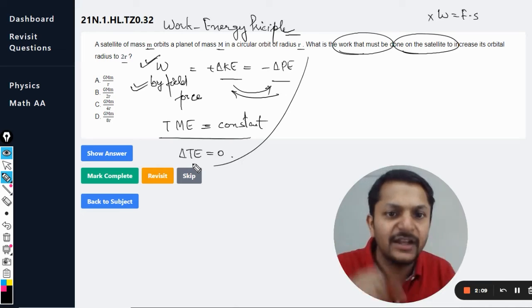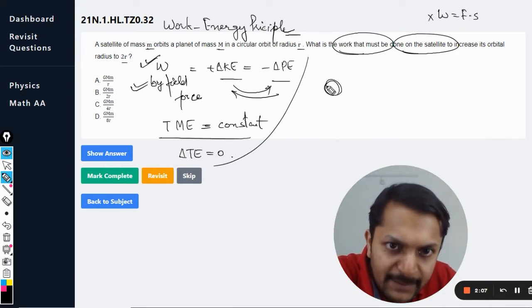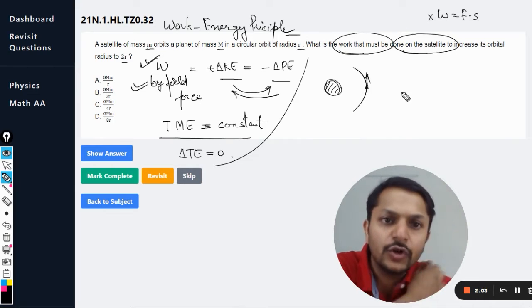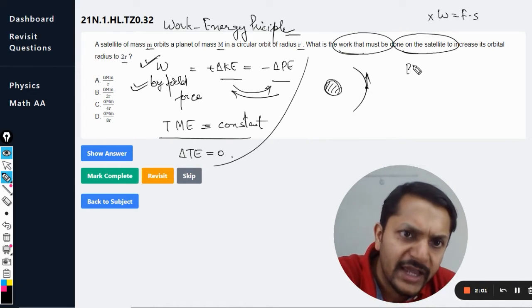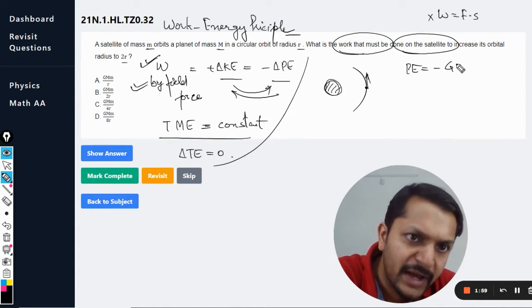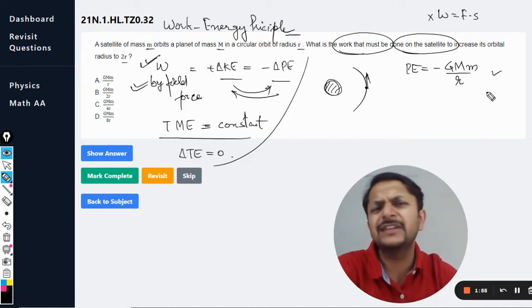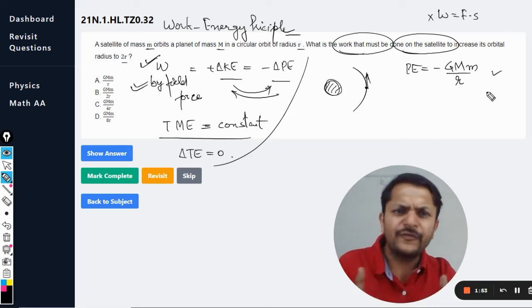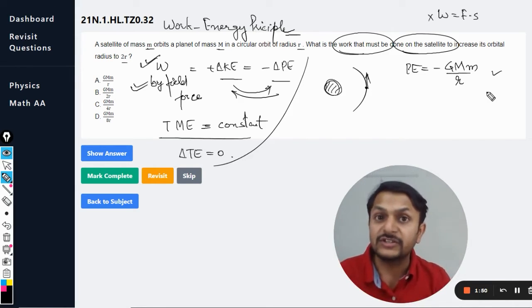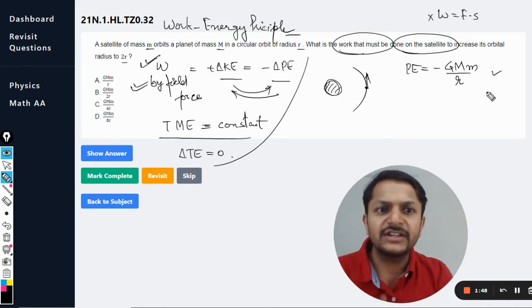Now I'm telling you about the energies of a satellite and how do we find it. For example, this is the planet and this is the satellite which is moving. The potential energy is given by minus GMm divided by r.